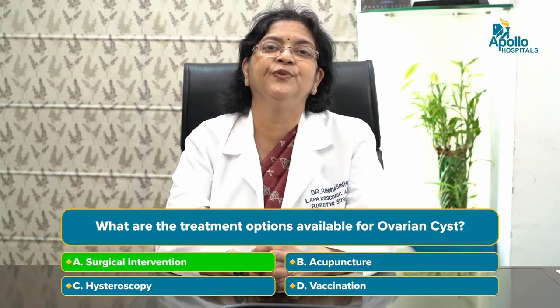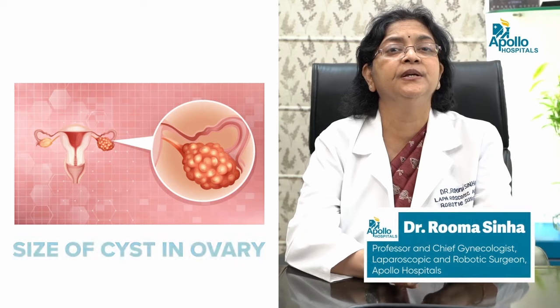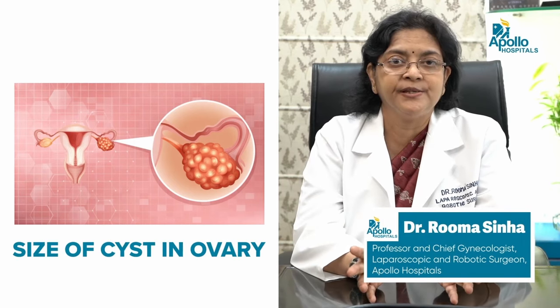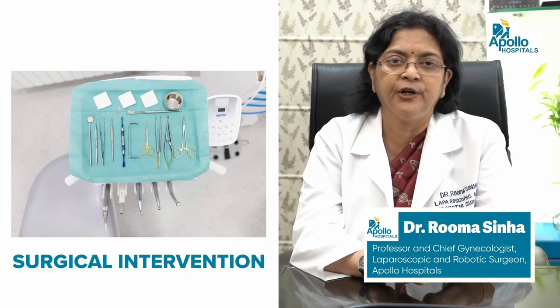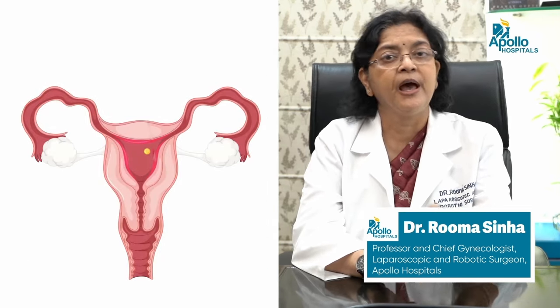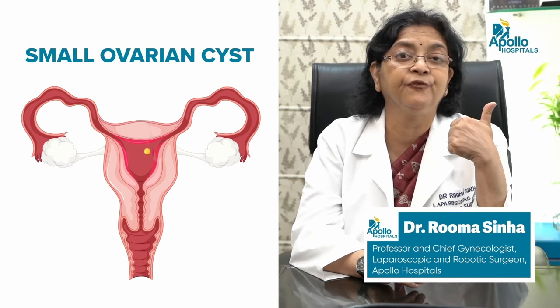Treatment of ovarian cysts depends on the type and size of the cyst. Any large cyst will definitely require surgical intervention. If the cyst is small and thought to be a functional cyst, we can observe for a few months to see whether it disappears. If the cyst belongs to the second category — a tumor but not cancerous — we can observe if it is small and not causing problems, but it requires removal because it will not disappear on its own and no medication will help. When these cysts are more than 5 centimeters, we do recommend removal.